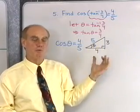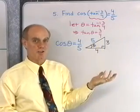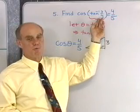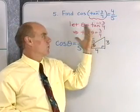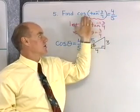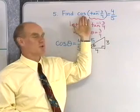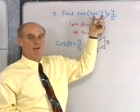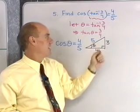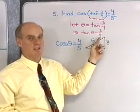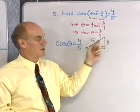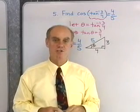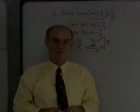This is actually a problem you've worked before, but worded a little differently. It might say: if the tangent of theta is 3/4, find the cosine of theta. We're saying the same thing with this notation: find the cosine of the inverse tangent of 3/4. Inverse tangent is an angle — specifically, the angle whose tangent is 3/4. So, that's a quick look at the trigonometric functions and their inverse trigonometric functions.